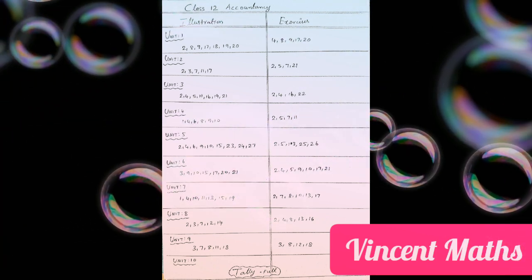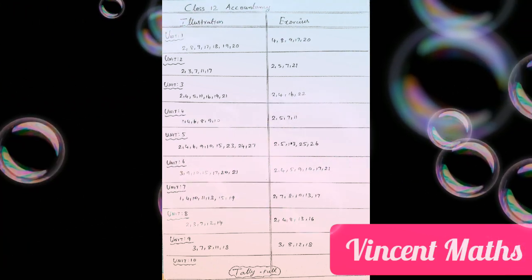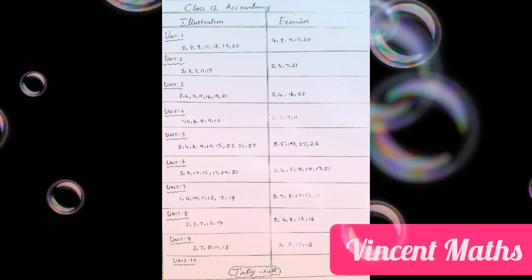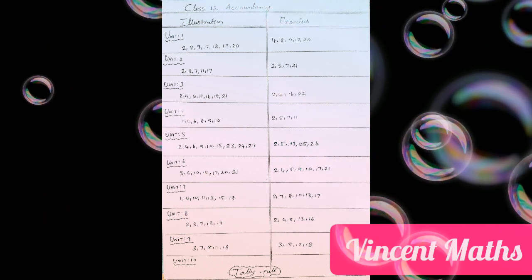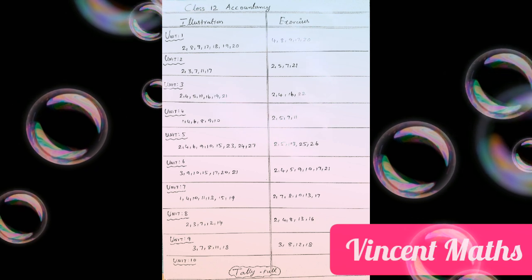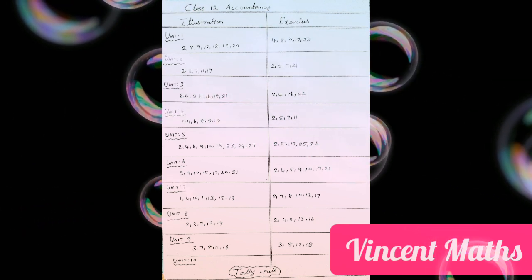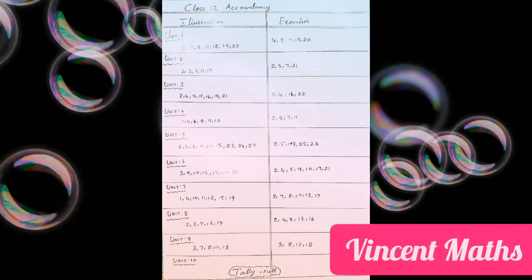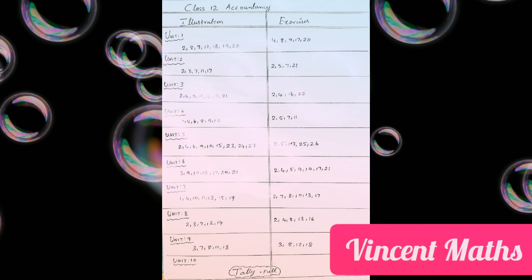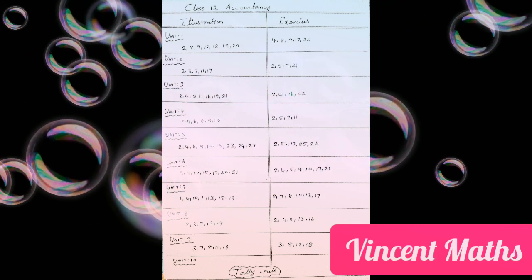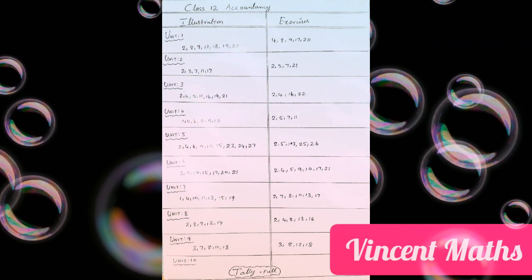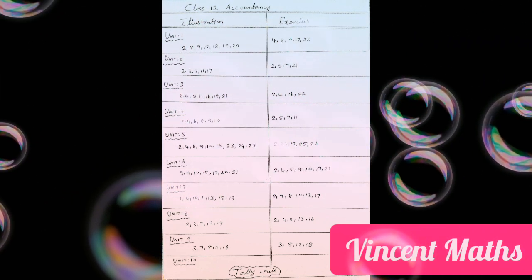This is the most important illustration. The important sums are: 1st, 4th, 10th, 11th, 13th, 15th, and 19th sum. This is the most important illustration: 1st, 2nd, 3rd sum.